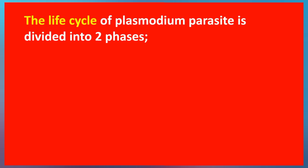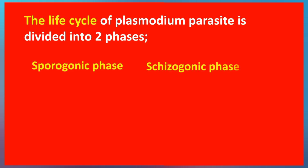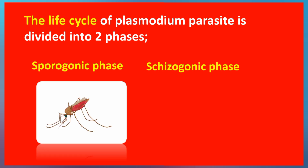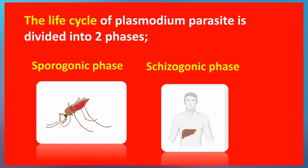The life cycle of the Plasmodium parasite is broadly divided into two main phases: the sporogonic phase and the schizogonic phase. The sporogonic phase occurs within the female Anopheles mosquito, whereas the schizogonic phase takes place within the human host.